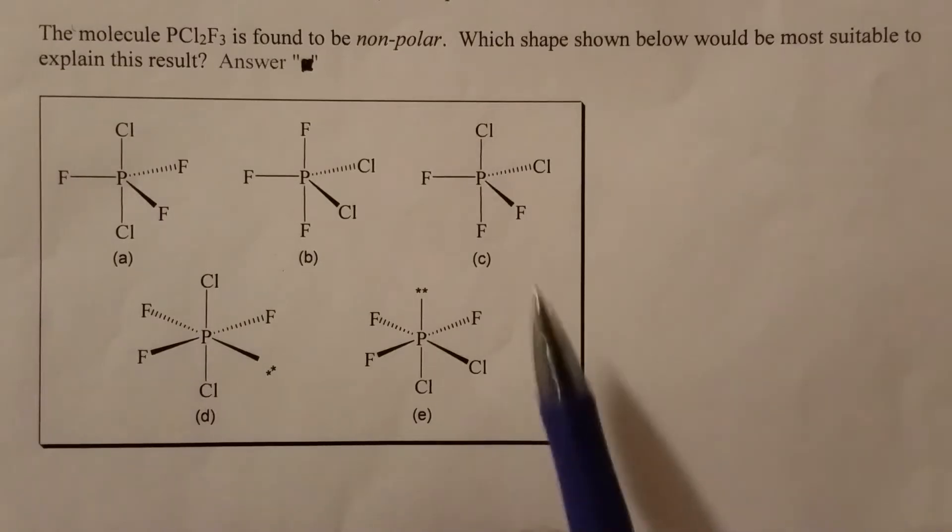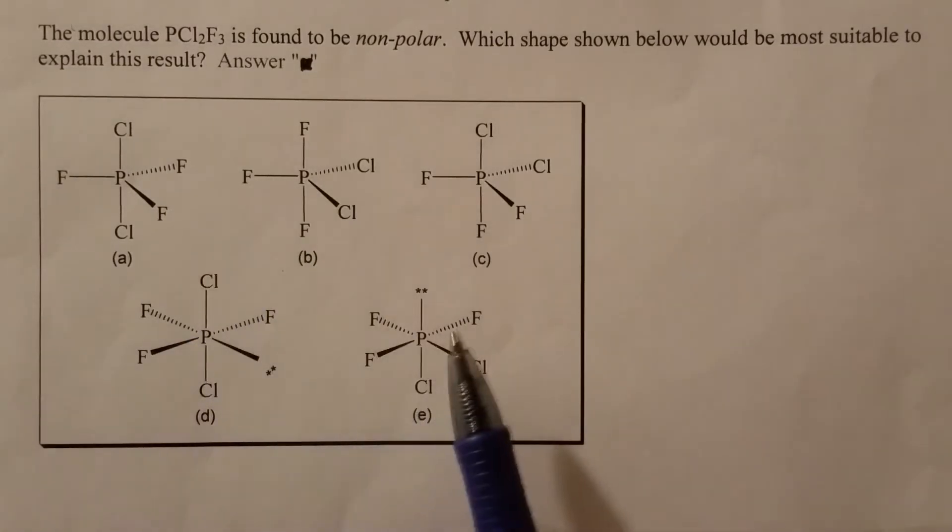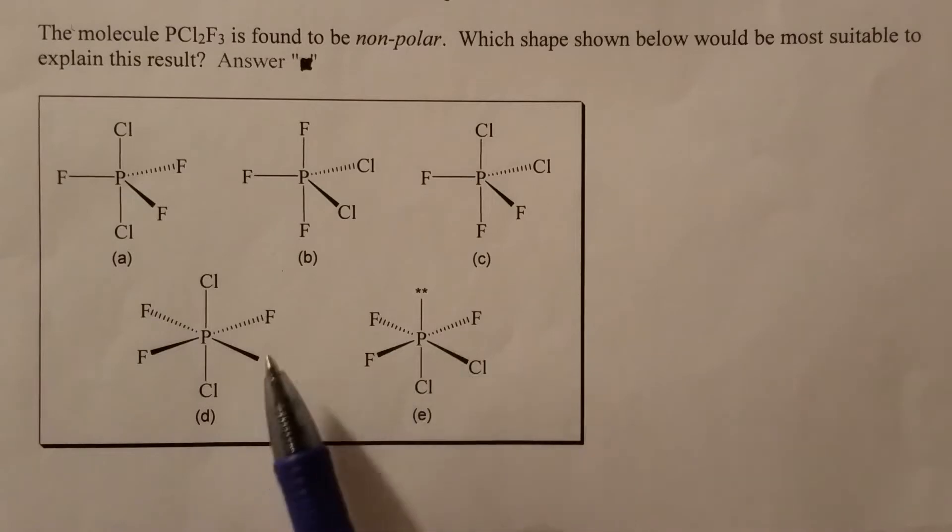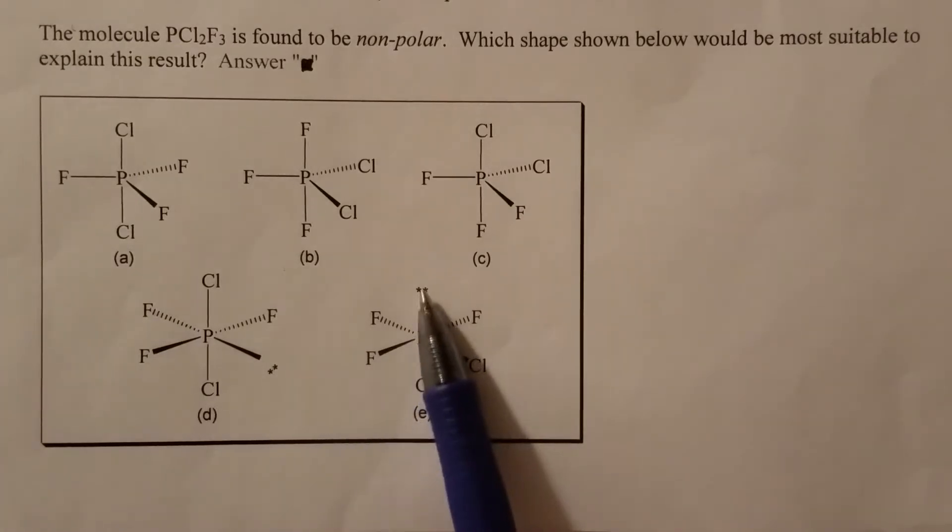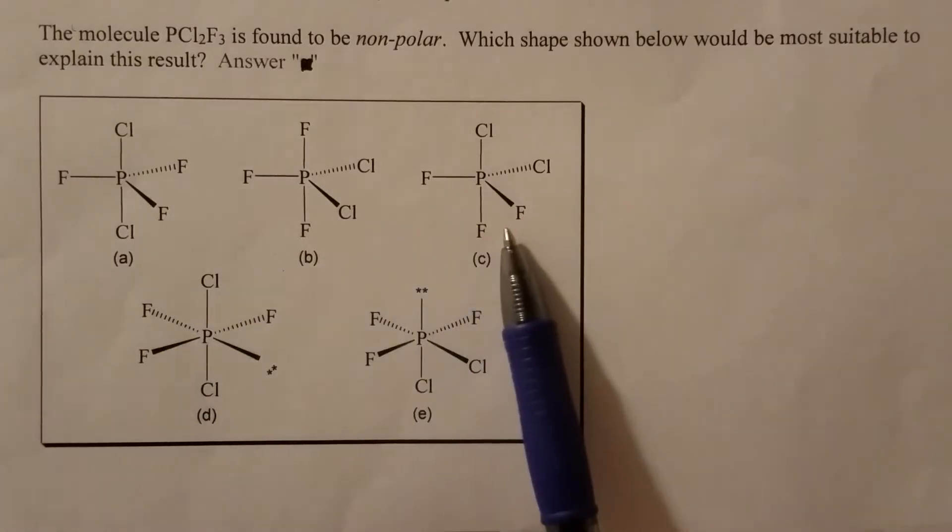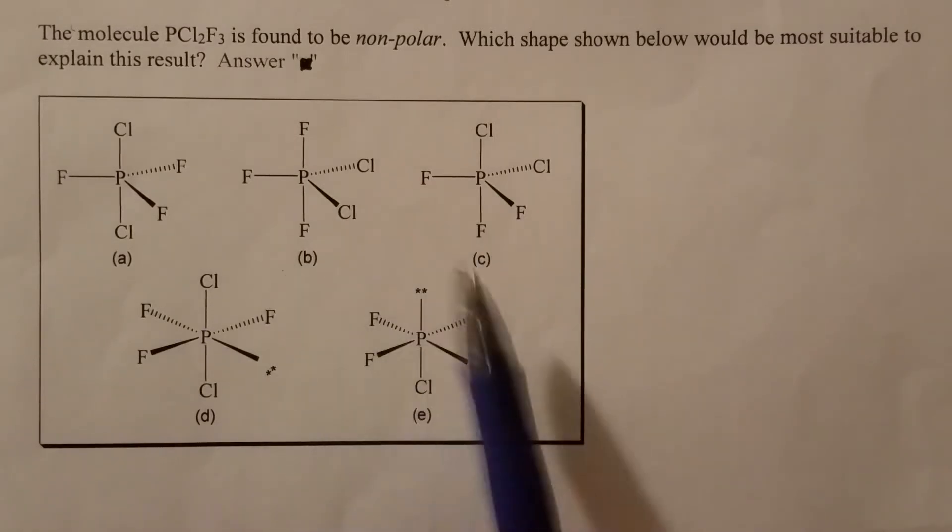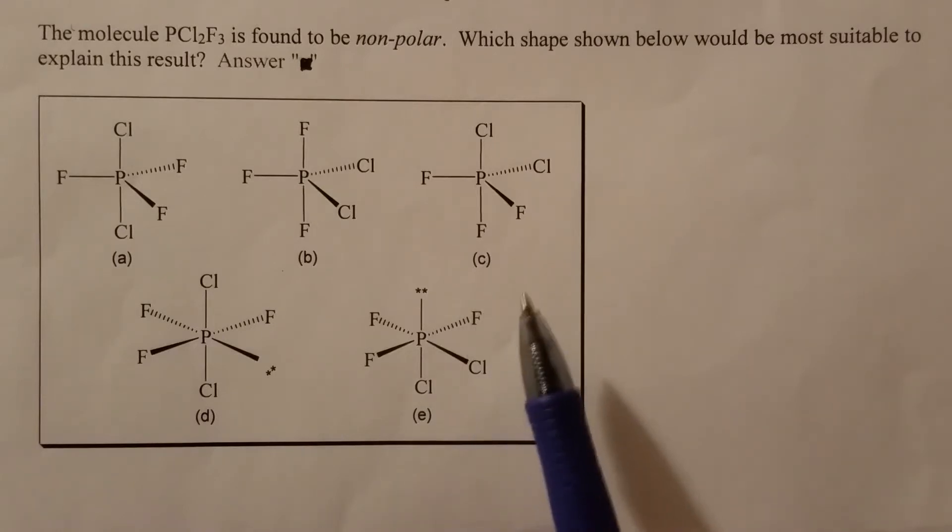When you take a quick look of the five choices, you realize there's some of them has lone pairs and some of them don't. Therefore, even though five structures are given, we still have to work on the Lewis structure by ourselves.